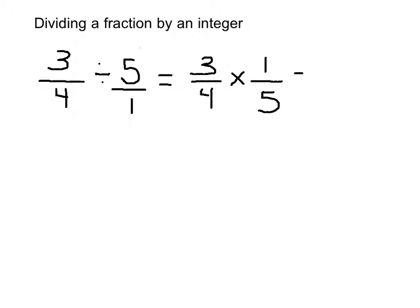We multiply our numerators, we get 3. Multiply the denominators, we get 20.